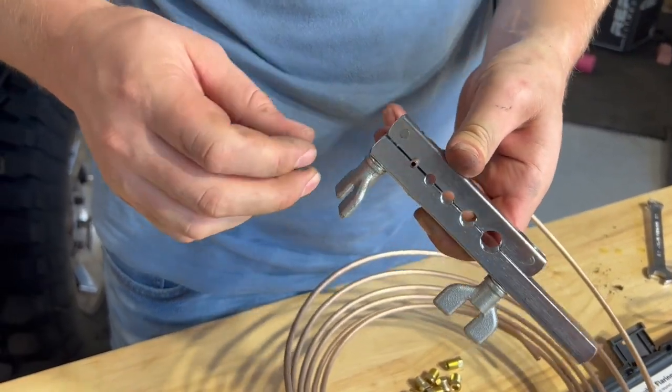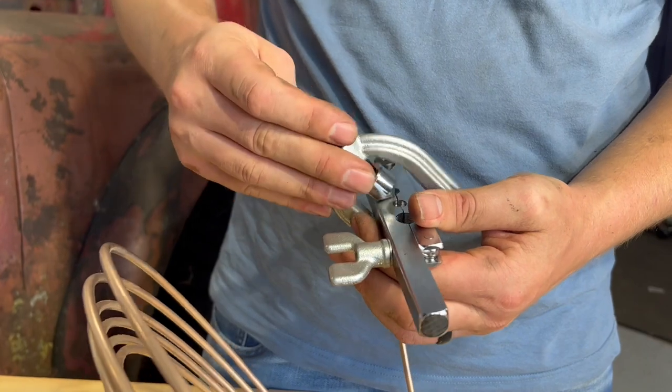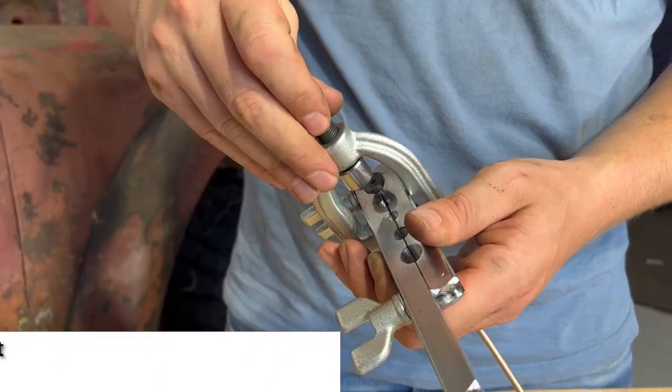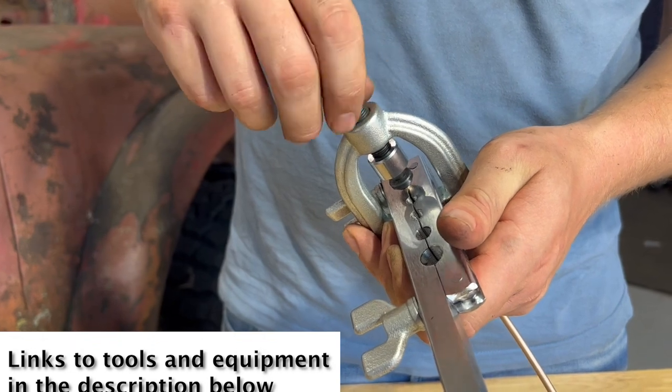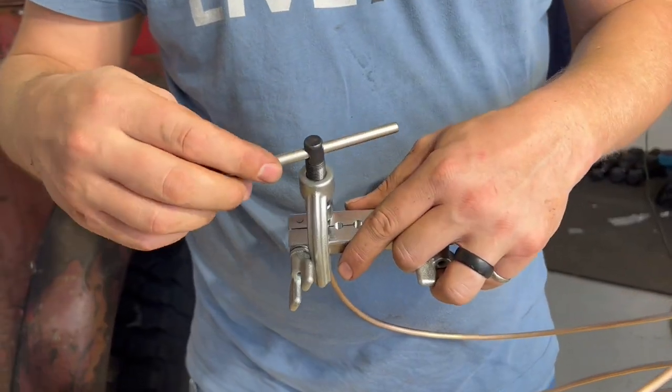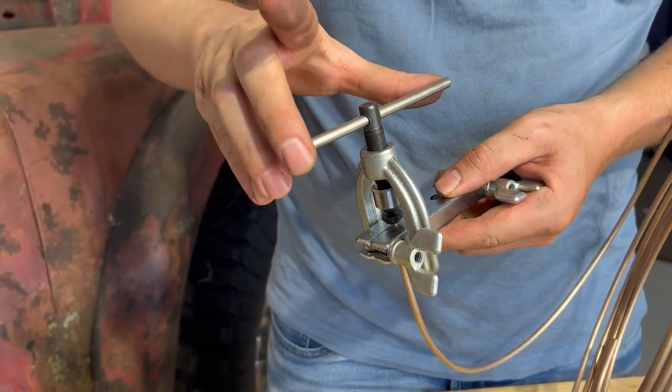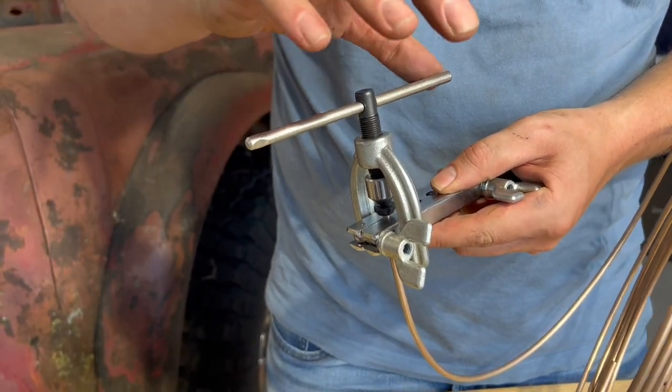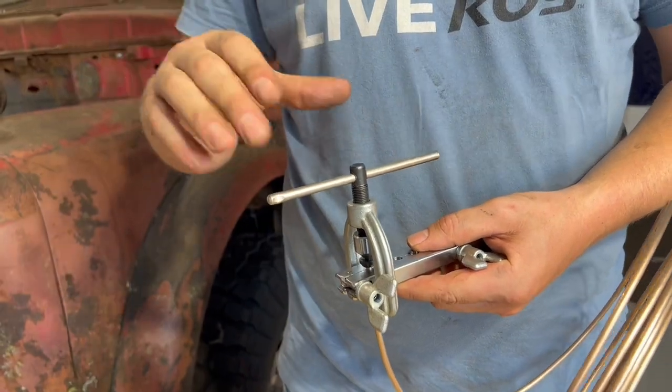Still looking good. Now make sure when you're spinning this you're trying to put equal force on both sides, on this side and this side. It'll help keep your flare symmetrical or not lean off to one side.